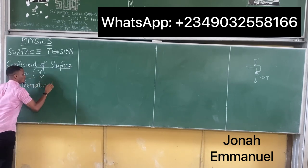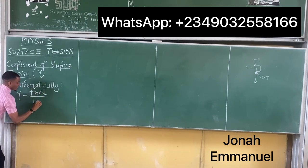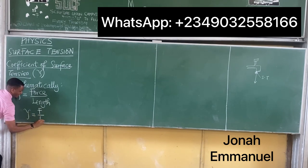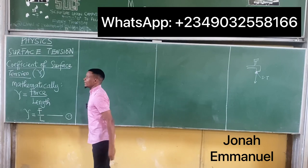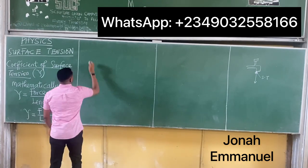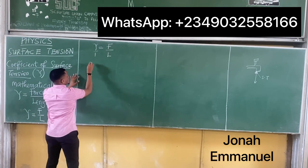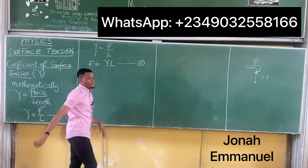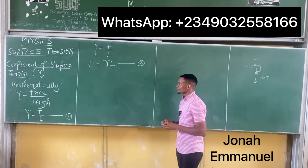Mathematically, surface tension gamma equals force per unit length: γ = F/L. This is equation one. Making F the subject by cross-multiplication gives us F = γL. Call this equation two.